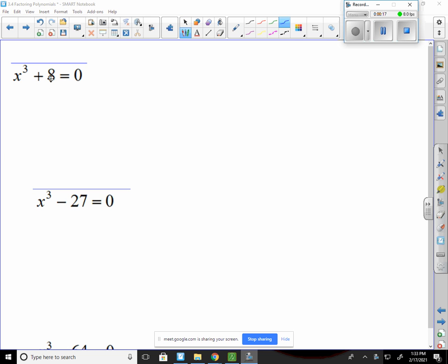So I have x cubed plus 8. We know that this 8 is the same as 2 to the 3rd, and the x is just x to the 3rd. So my a would be x, and my b would be 2. And so now I'm plugging them into our formula. This would be x plus 2, and then x squared, and then it's minus ab, which would be 2x, and then plus b squared, which would be 2 squared, and that's 4.